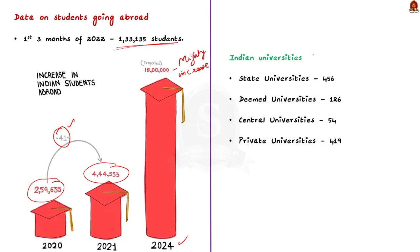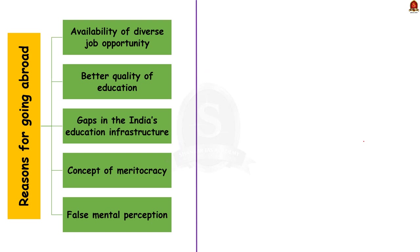India has 1,055 universities as per UGC data — 456 state universities, 126 deemed universities, 54 central universities, and 419 private universities. In spite of these universities, students are still preferring foreign universities. The first and foremost reason is the availability of diverse and well-paying job opportunities in foreign countries, making students prefer higher education abroad.